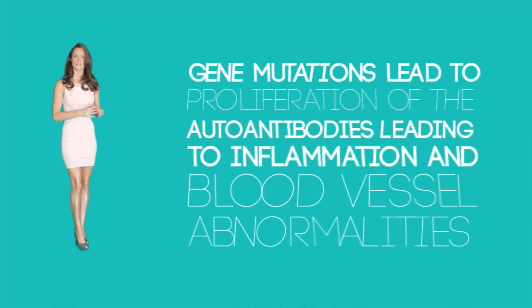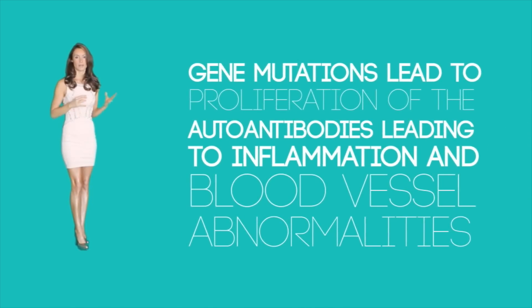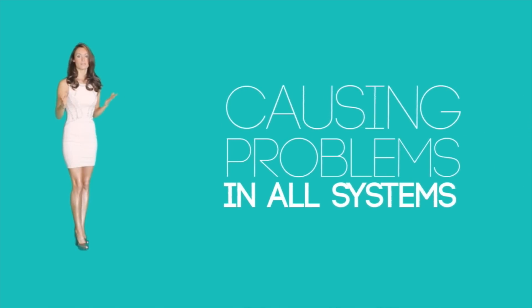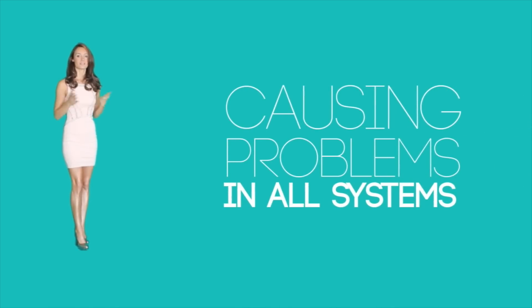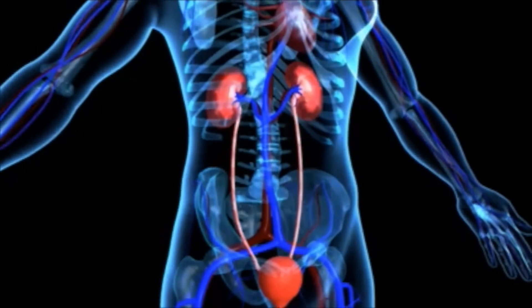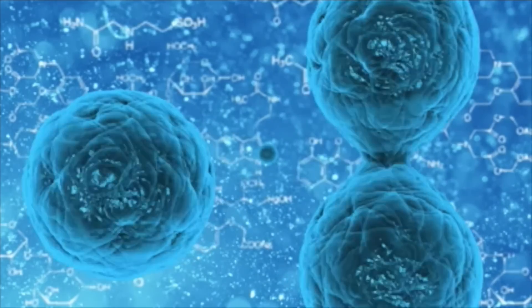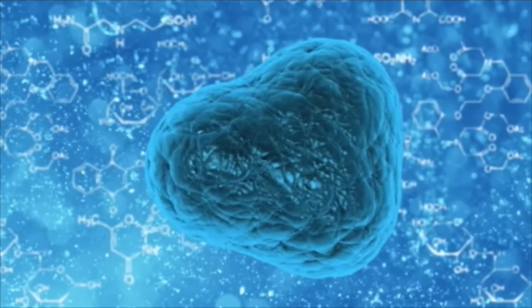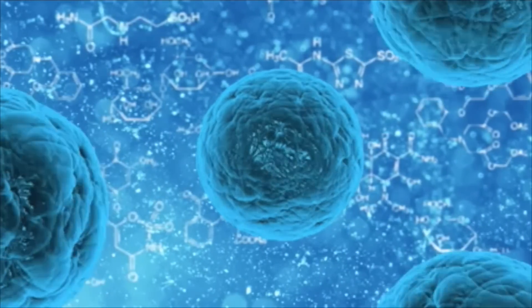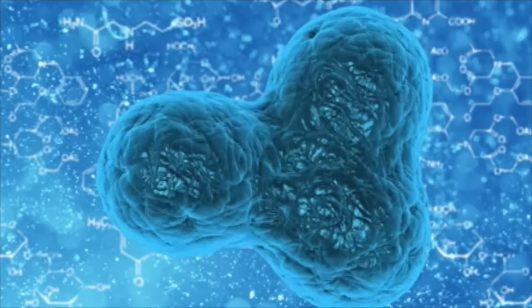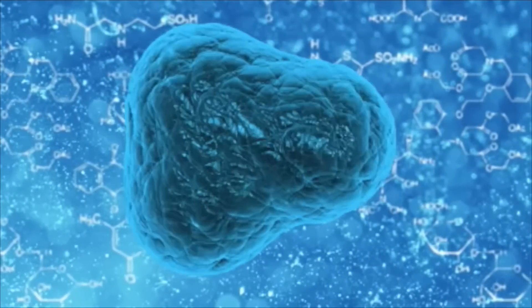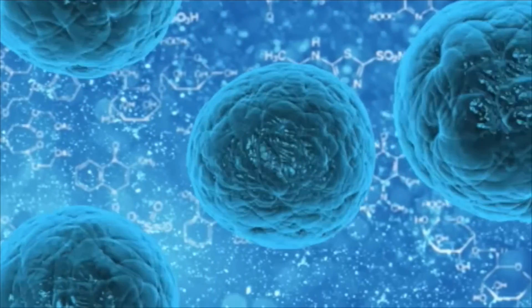It is suspected that gene mutations lead to proliferation of autoimmune antibodies, leading to inflammation and blood vessel abnormalities, eventually causing problems in all systems. The most widely studied area is the kidney, concerning glomerulonephritis. The gene mutations appear to cause abnormal lymphocyte production — specifically increased B cells. A B cell is part of the body's main defense system to fight against antigens; however, in lupus patients, abnormal B cells are produced that instead attack the body, which is called autoimmune disorder.